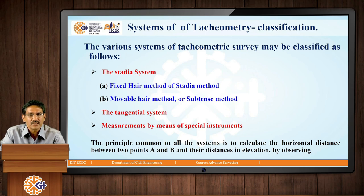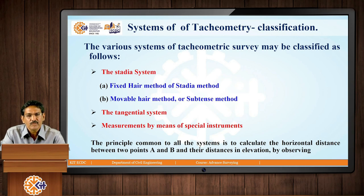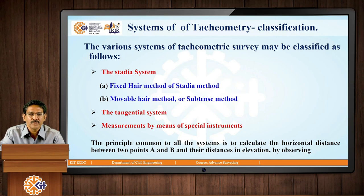This is the overall systems. In the tachymetric system, it consists of the fixed hair method and movable hair method, which are the stadia methods. The movable hair method is also called the substance method. In the ordinary theodolite method, we will be looking at the tangential system as a non-tachymetric instrument method and also the substance bar method. Then we will be moving on to special instruments — the autoreduction tachymeters — in the next sessions.